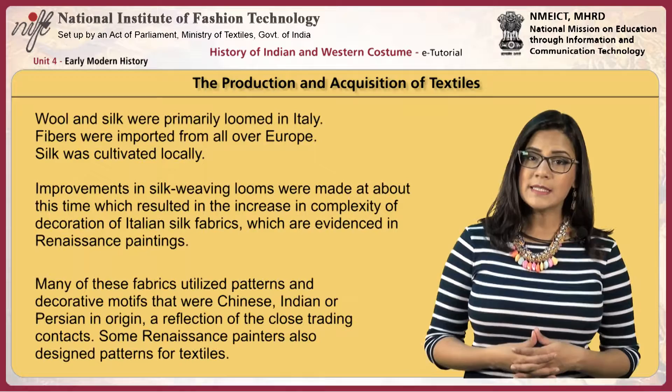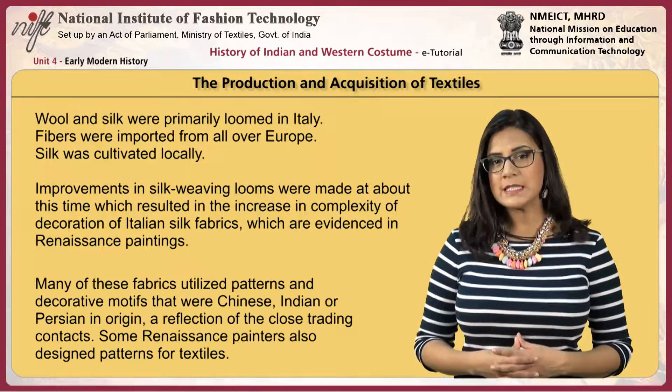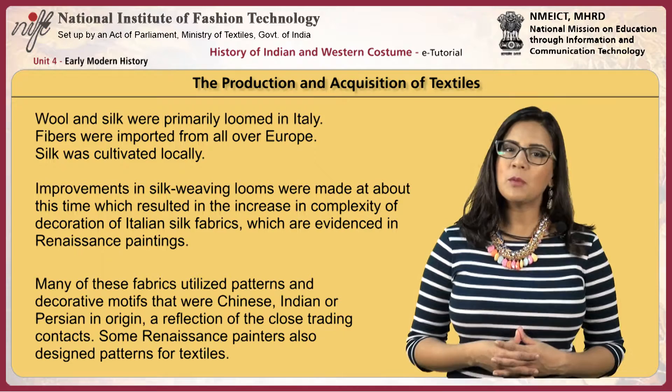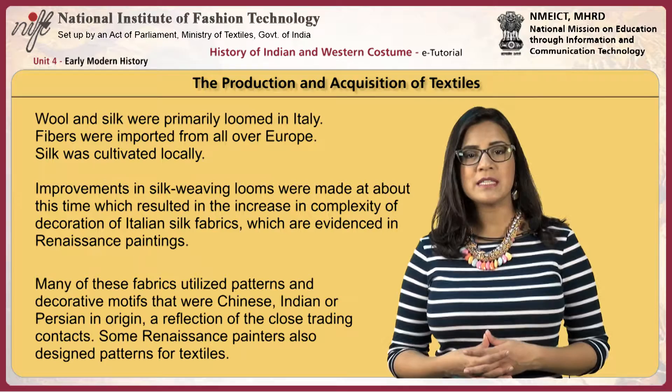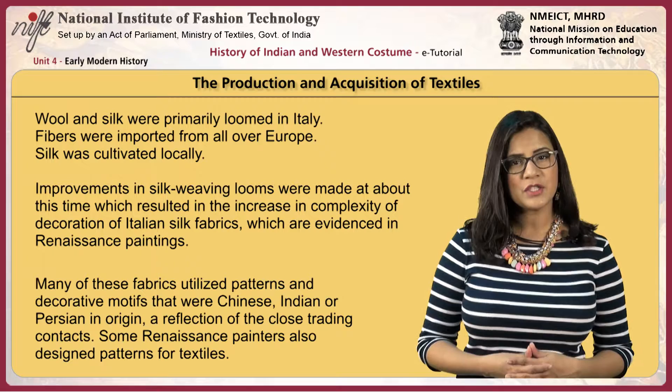Wool and silk were primarily loomed in Italy. Fibres were imported from all over Europe. Silk was cultivated locally. Improvements in silk weaving looms were made at about this time, which resulted in an increase in complexity of decoration of Italian silk fabrics, as evidenced in Renaissance paintings. Many of these fabrics utilized patterns and decorative motifs that were Chinese, Indian or Persian in origin, a reflection of the close trading contacts.